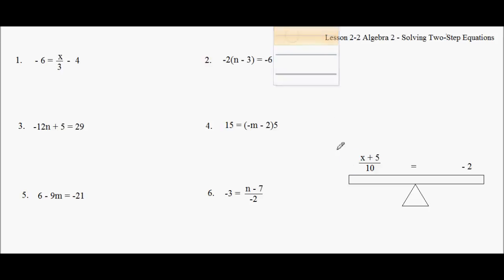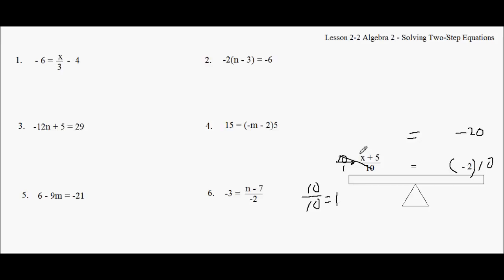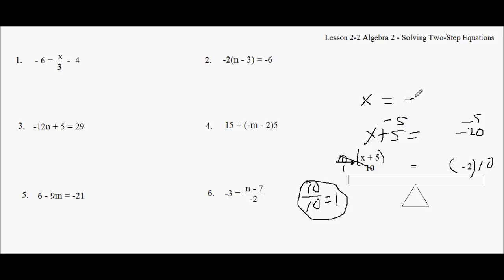I multiply this side by 10 and the other side by 10, and I get negative 20. This cancels because it's over 1 — I wanted 10 over 10, which is 1. And 1 times the quantity on top is just that quantity, so I get x plus 5. Then I subtract 5 from both sides — that cancels out to 0. On multiply and divide I get a 1; on add and subtract I get a 0. So I get minus 25 as my answer.